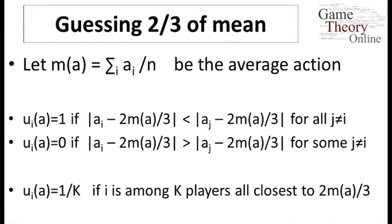So if we think about the average of all the actions, let m(a) be the average of all the actions, the named numbers. Then what does a person get? Well, you end up winning, you get a payoff of one in a case where you end up having the distance between the announcement and two-thirds of the mean being less than that of any other player. You get zero if there's somebody else, some other player, who ends up having a closer announcement to two-thirds of the mean than you do.